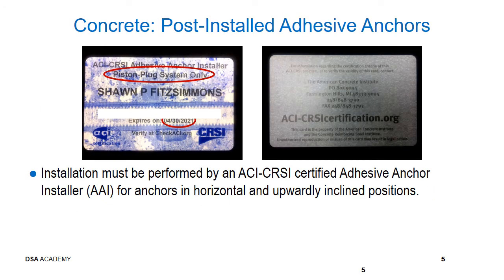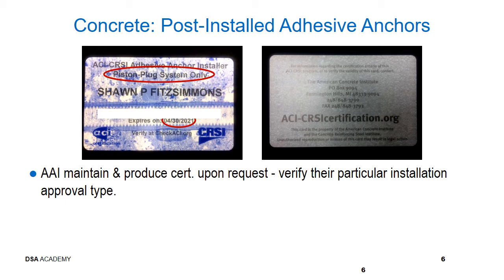This slide presents a wallet card of a certified adhesive anchor installer. There are three types of certification: piston plug system, retaining cap system, and combined piston plug and retaining cap system. Note: certified adhesive installer is required for anchors in horizontal and upwardly inclined positions. Project inspector must check the name on the wallet card with the installer's photo ID, make sure the type of system used matches that on the wallet card, verify expiration date of the card, and check certification on the ACI-CRSI website.